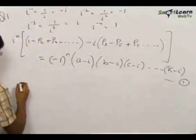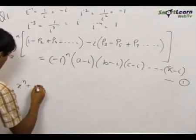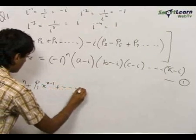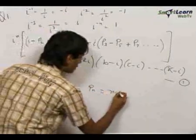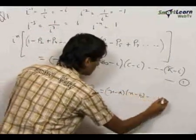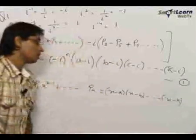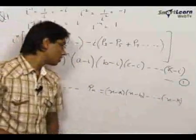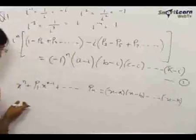Now returning to the original expression x^n + p₁·x^(n-1) + ... + pₙ = (x−a)(x−b)...(x−k). Initially we put x = i; now we will put x = −i.